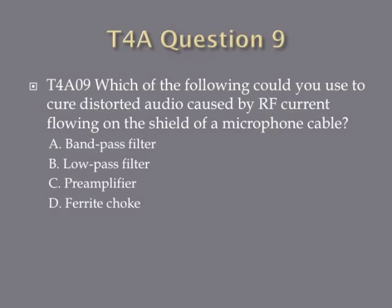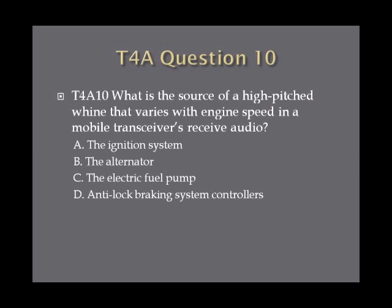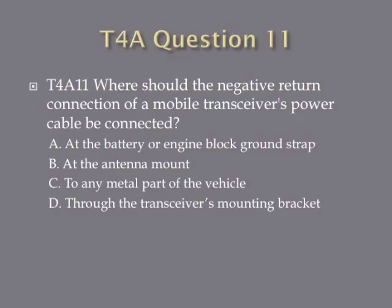Question 9: Which of the following could you use to cure distorted audio caused by RF current flowing on the shield of a microphone cable? A. Band pass filter. B. Low pass filter. C. Preamplifier. Or D. Ferrite choke. Question 10: What is the source of a high-pitched whine that varies with engine speed in a mobile transceiver's receive audio? A. The ignition system. B. The alternator. C. The electric fuel pump. Or D. Anti-lock braking system controllers. Question 11: Where should the negative return connection of a mobile transceiver's power cable be connected? A. At the battery or engine block ground strap. B. At the antenna mount. C. To any metal part of the vehicle. Or D. Through the transceiver's mounting bracket.